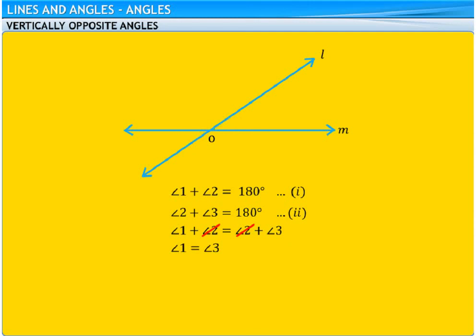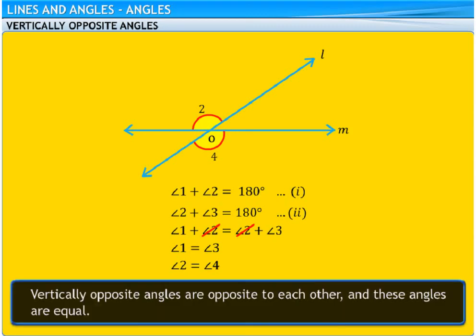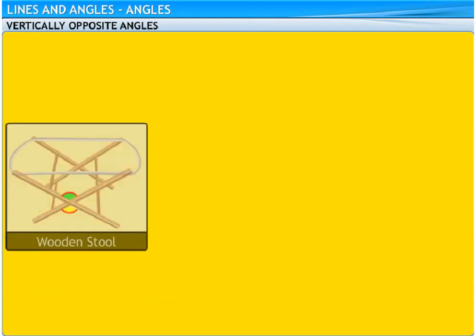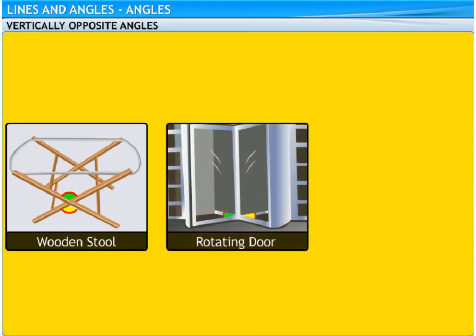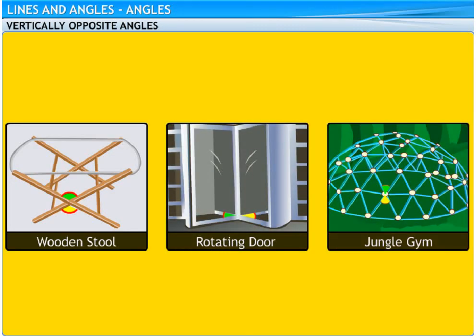Similarly, we can prove that angle 2 is equal to angle 4. So, vertically opposite angles are opposite to each other and these angles are equal. Take a look at the angles formed by this wooden stool, rotating door and jungle gym. These are a few examples of vertically opposite angles.